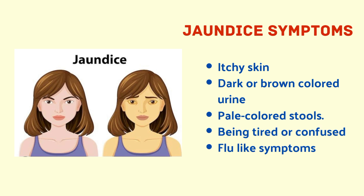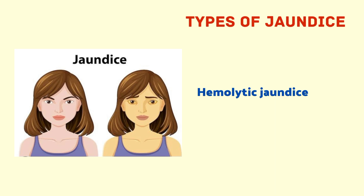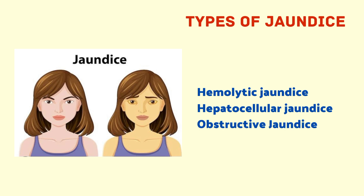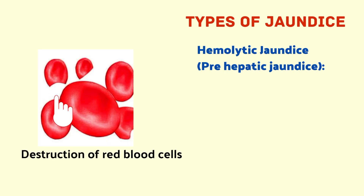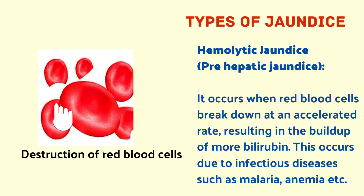Now let us see the types of jaundice: hemolytic jaundice, hepatocellular jaundice, and obstructive jaundice. Hemolytic jaundice, also called pre-hepatic jaundice, occurs when red blood cells break down at an accelerated rate, resulting in the buildup of more bilirubin. This occurs due to infectious diseases such as malaria, anemia, etc.